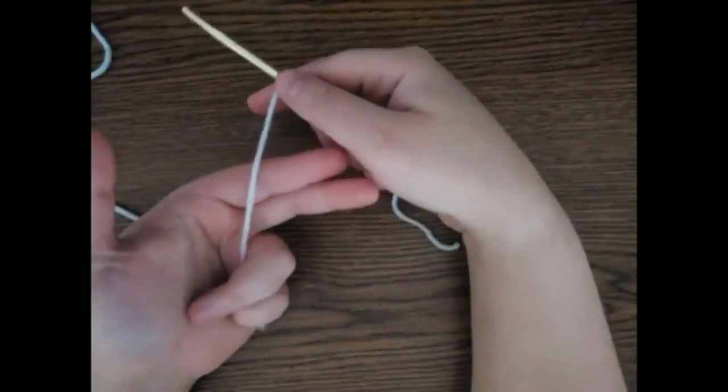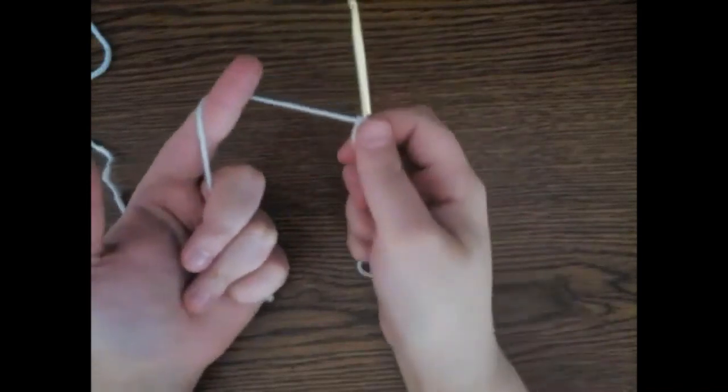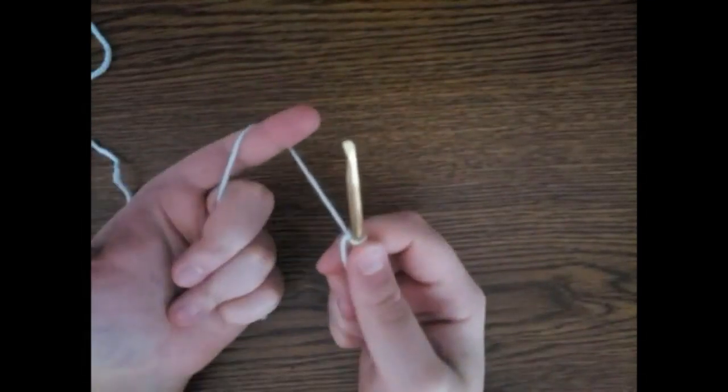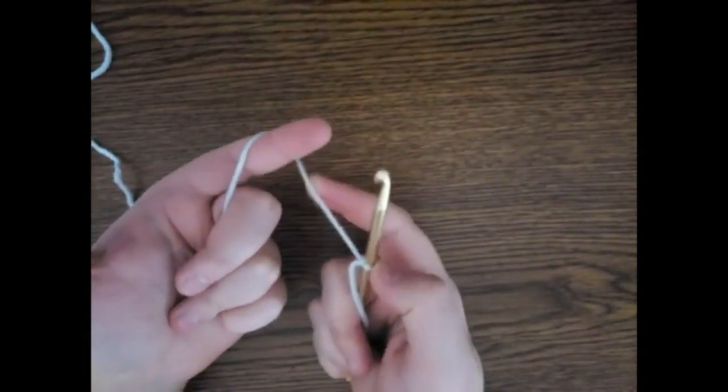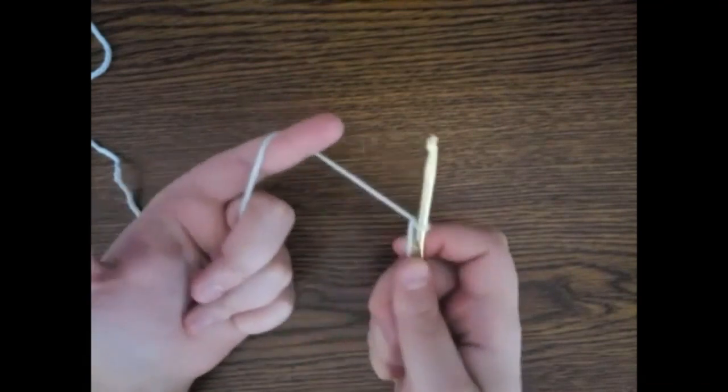Now that my yarn is secured, I wrap it around my pointer finger, starting from the left side of my finger and bringing it around to the front. I usually pull my hook about 2 inches away from my pointer finger to leave enough space for me to grab the yarn with my hook later.